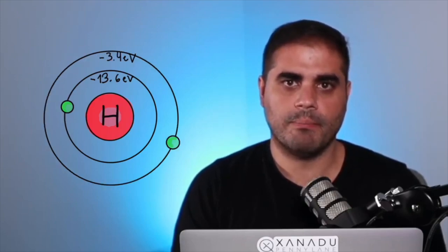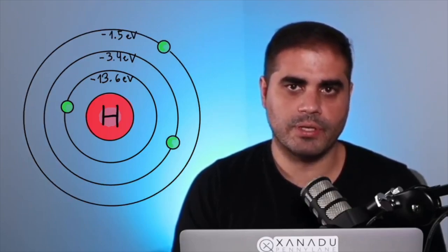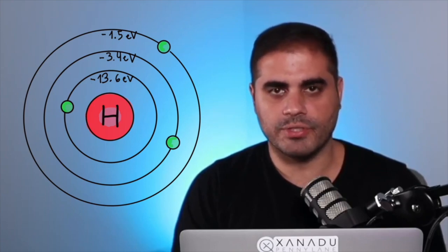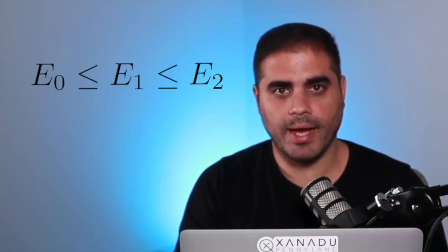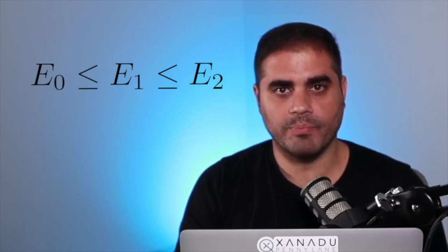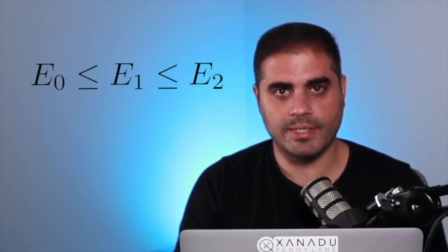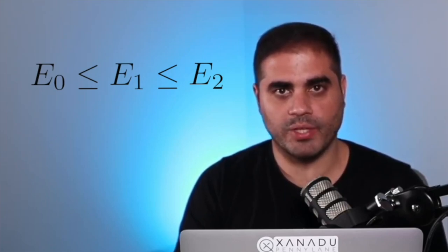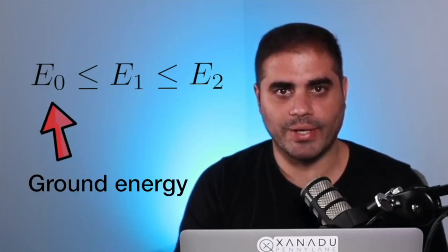So, for example, for a hydrogen atom, the eigenvalues of the Hamiltonian are minus 13.6 eV, minus 3.4 eV, minus 1.5 eV, and others. What we observe in this case, and actually in all physically relevant cases, is that the Hamiltonian has a lowest eigenvalue. That is, physical systems have a lowest possible energy, which is known as the ground energy.